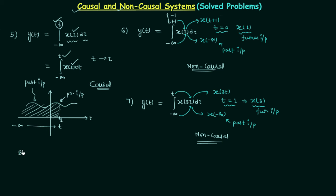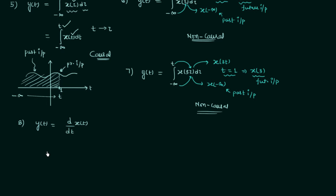Let's move to problem number 8, the last problem in this lecture. This time the output y(t) is equal to d/dt of x(t). This problem is a little contradictory — the solution will not give us the exact nature of the system. To understand this we use the concept of differentiation. When you differentiate a signal with respect to the independent variable, you get the slope of that signal. So differentiating x with respect to t gives y(t), the slope of the signal.